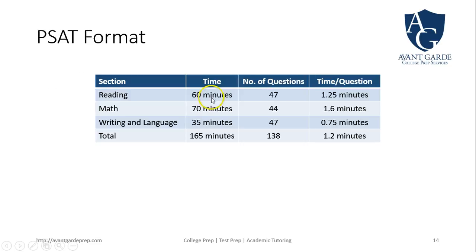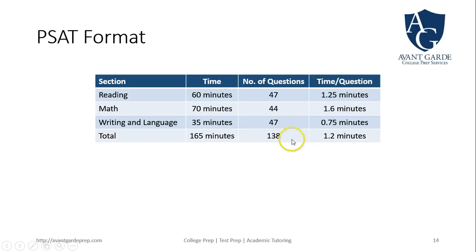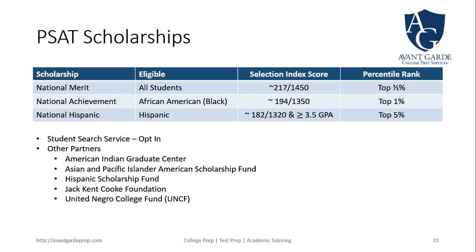The PSAT format is shorter than the SAT: reading is 60 minutes (versus 65 on the SAT), math has one section of 70 minutes, and writing and language is 35 minutes, totaling 165 minutes — about two and a half hours — compared to the SAT which is closer to four hours.